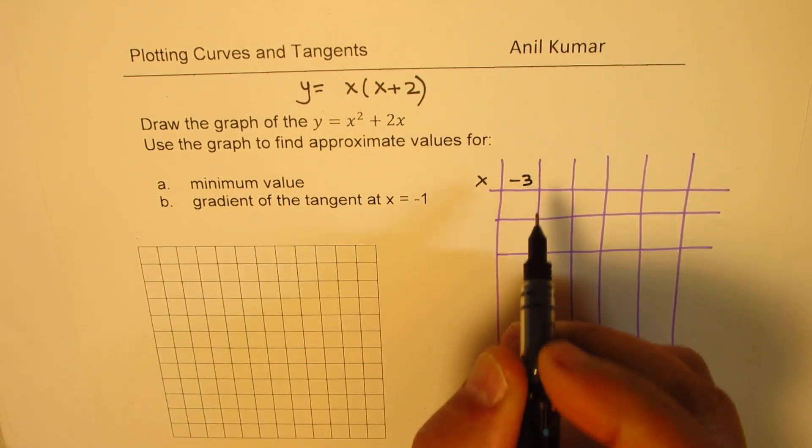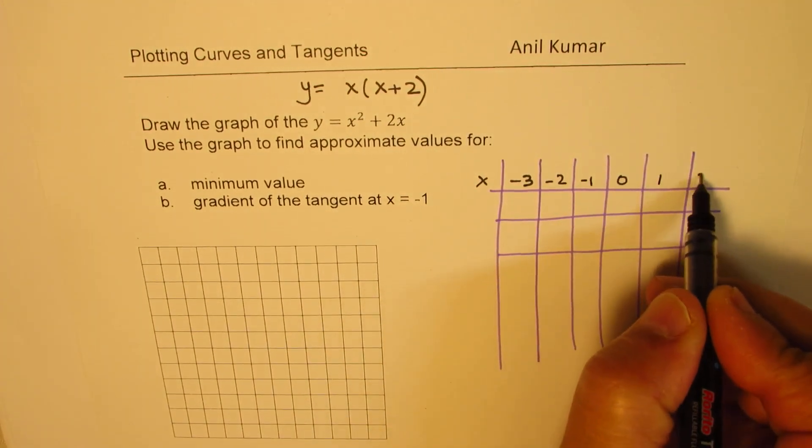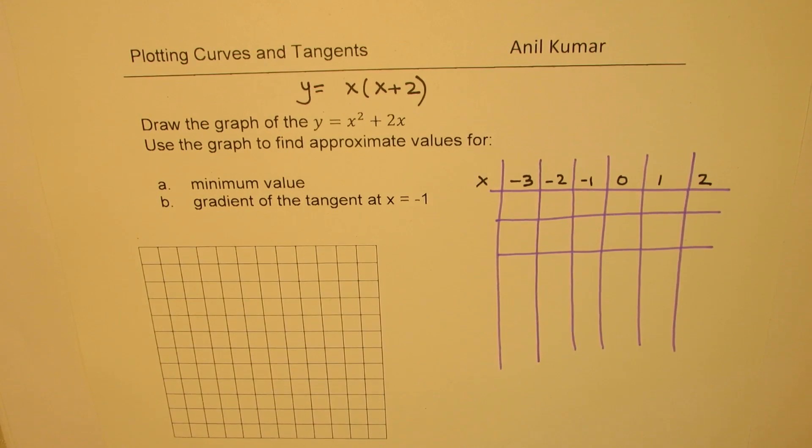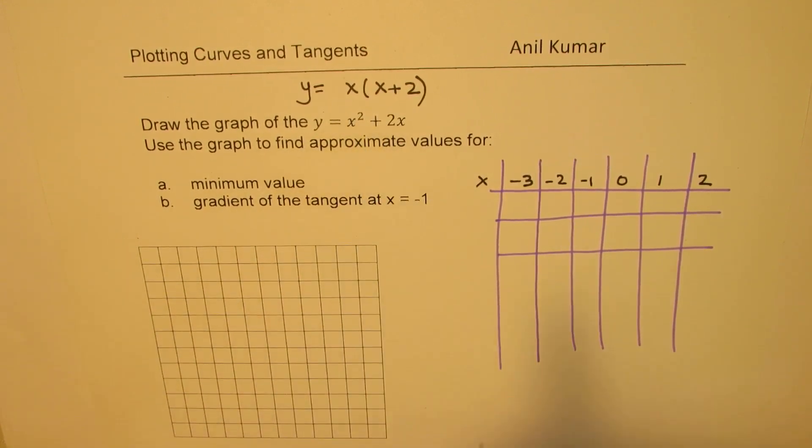So that means we should have -3. So we have -2, -1, 0, 1 and 2. So these are good values to select. Now the equation basically is x² + 2x.